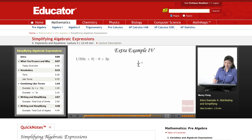Let's try one last one with distributing a fraction: 1/2(6y + 8) - 6 + 2p. So we have a lot of things in play here. We have fractions, we have distributing, we have order of operations, and we have combining like terms.